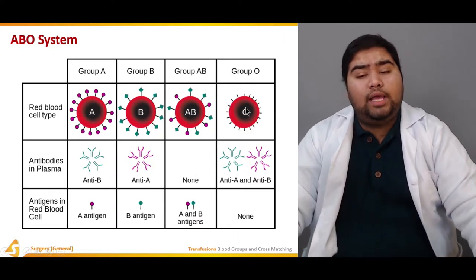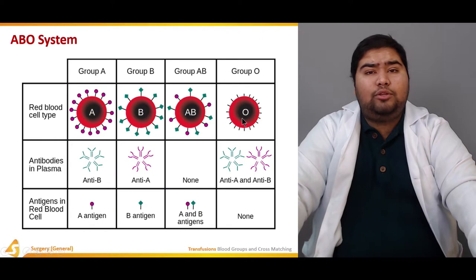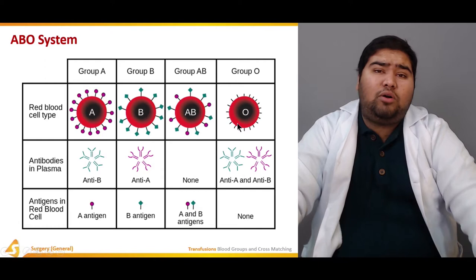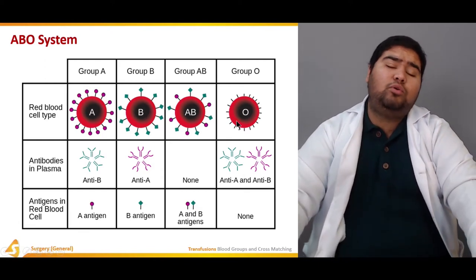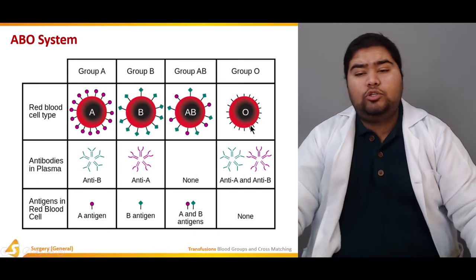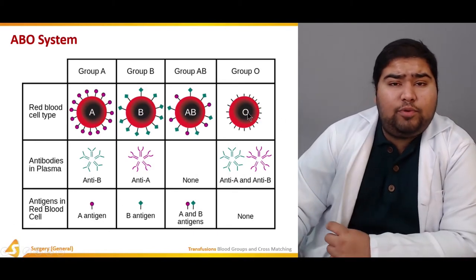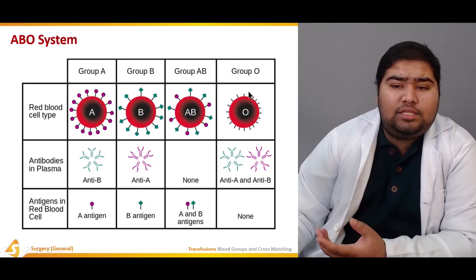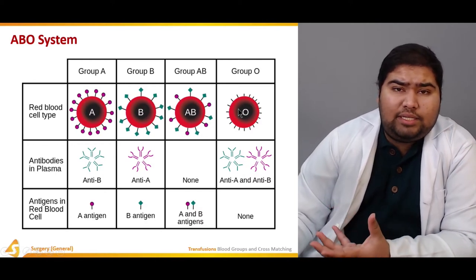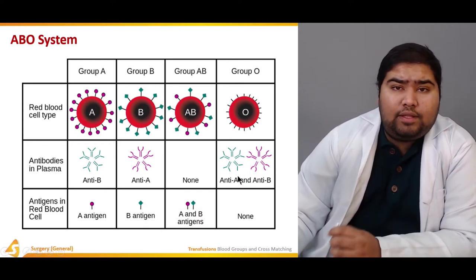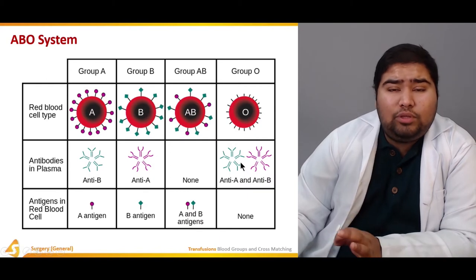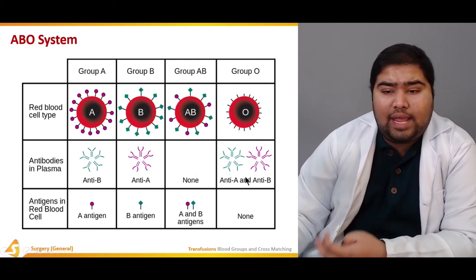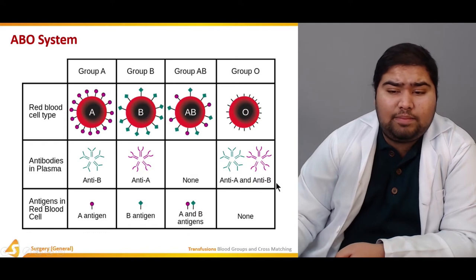This is blood group O. The phenotype is blood group O and the genotype is also OO — that's the only genotype, because if there's either A or B with the O it becomes either A or B. The surface glycoprotein molecules remain unmodified, so there are no antigens on blood type O. However, due to the absence of both antigens, it has both antibodies — anti-A antibodies and anti-B antibodies.